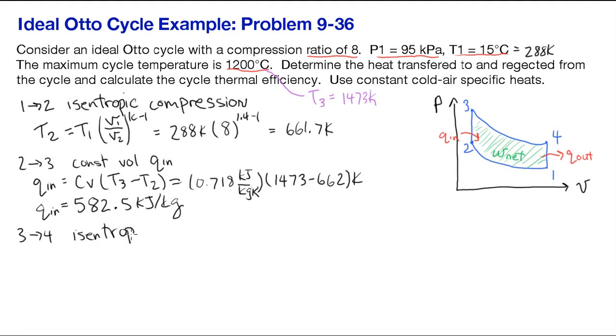From 3 to 4 is the isentropic expansion. So we can use our isentropic formula for constant specific heats again. And again we know our compression ratio.